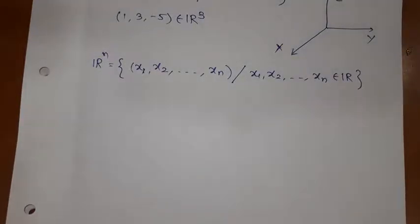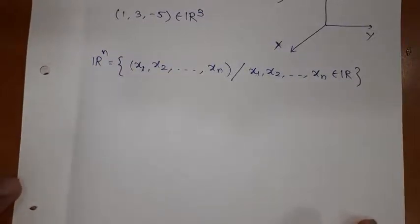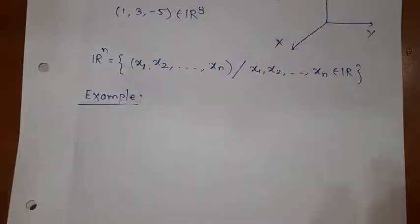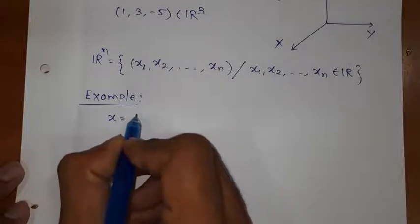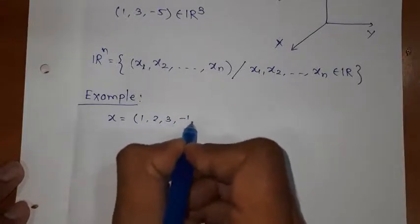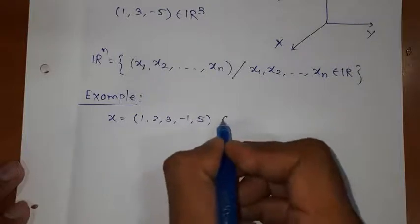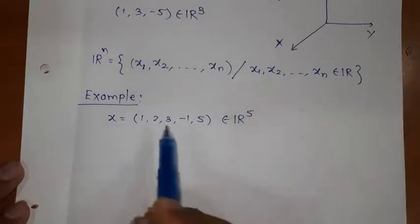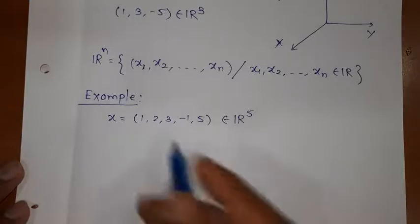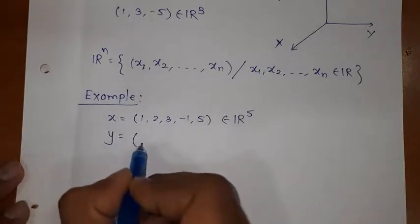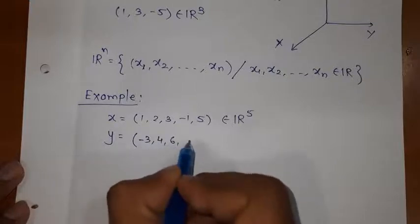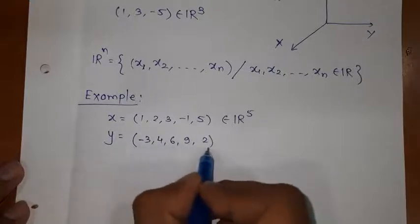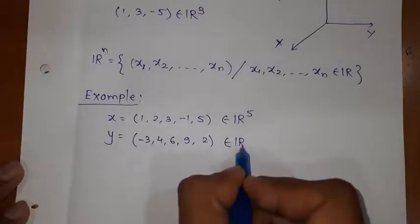The next thing is how to add two elements of R^n. Let us take one example. I am considering R^5. I am taking one element of R^5: (1, 2, 3, -1, 5). Whatever we want, we can take, but the compulsion is 5 components should be there. After that, I will take one more element of R^5: (-3, 4, 6, 9, 2). This is an element of R^5.